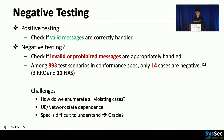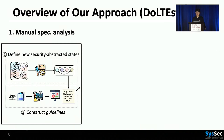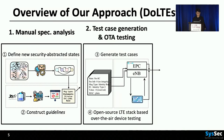To overcome these challenges, we designed DOLTIST. In the first step, we manually read the specification many, many times. Through this one-time effort, we define new security abstracted states and construct guidelines. These are our rules for generating test cases and become inputs for the next step. In step two, using these guidelines, we generate test cases — we have 1,848 test cases. Then, for each device and for each test case, we move the states of EPC, eNodeB, and phone to the particularly required states and send the test message over the air.